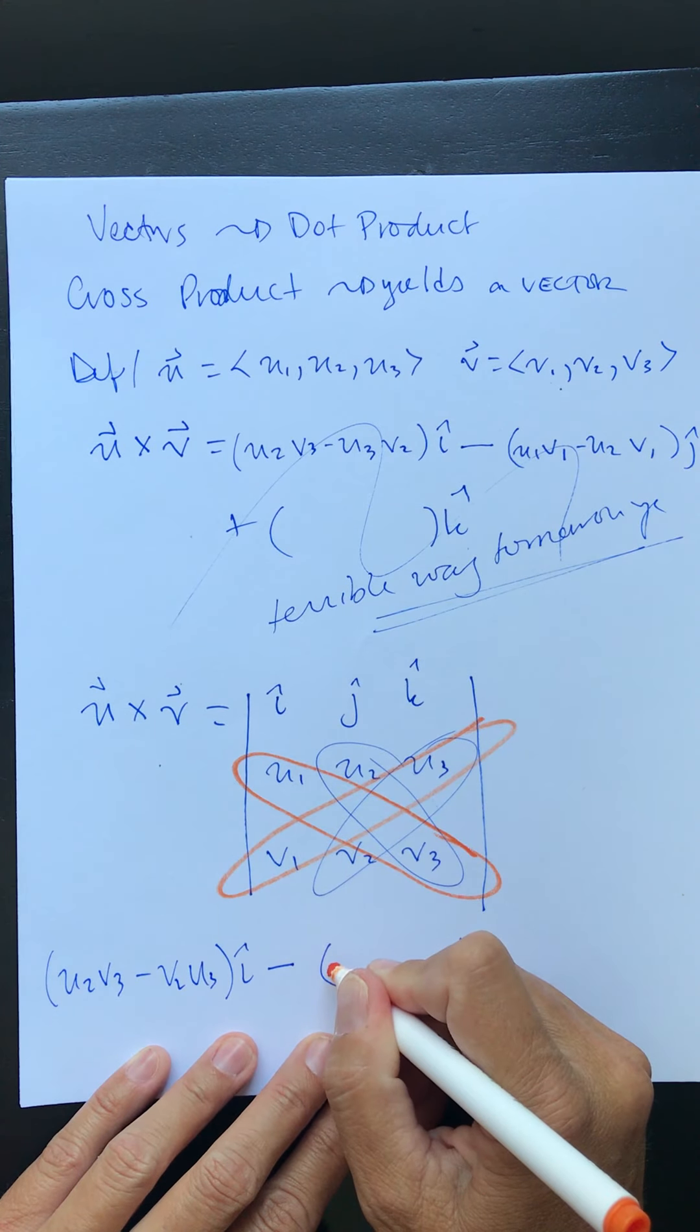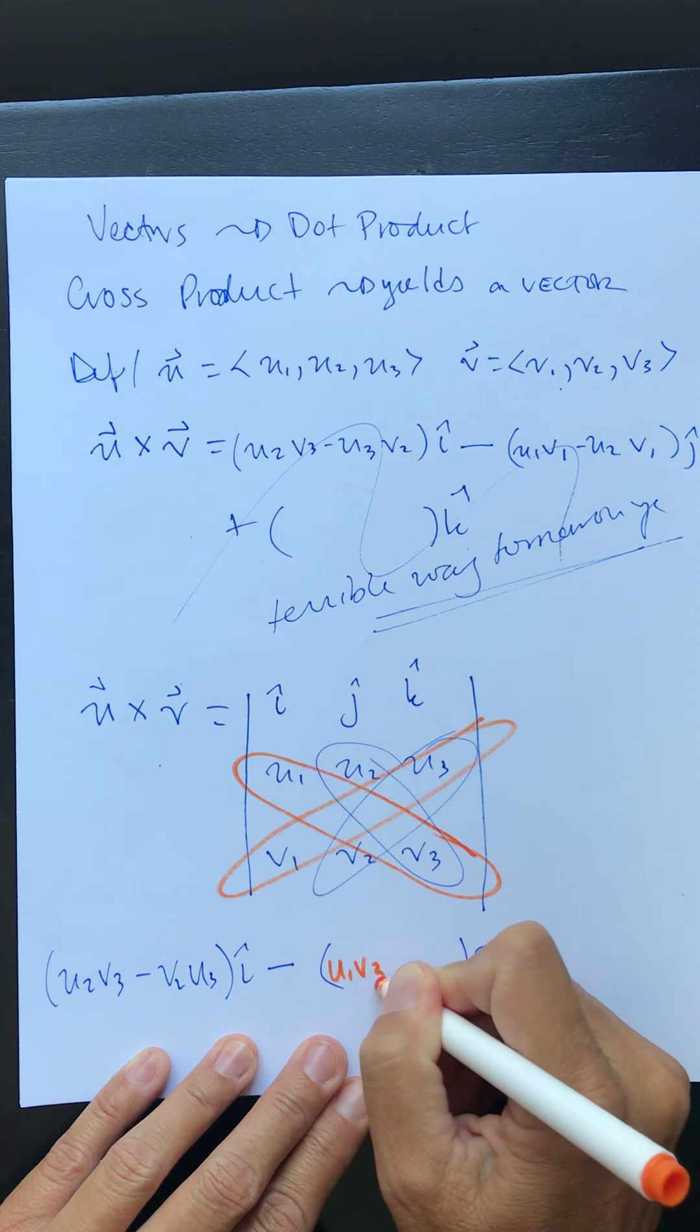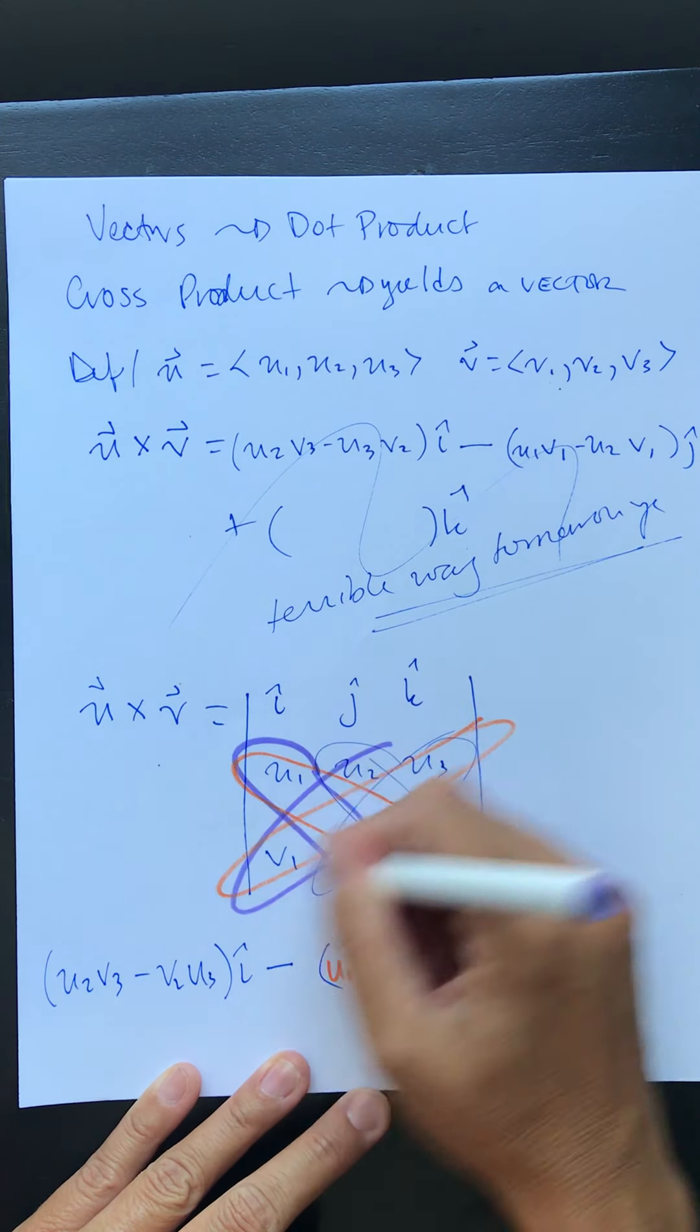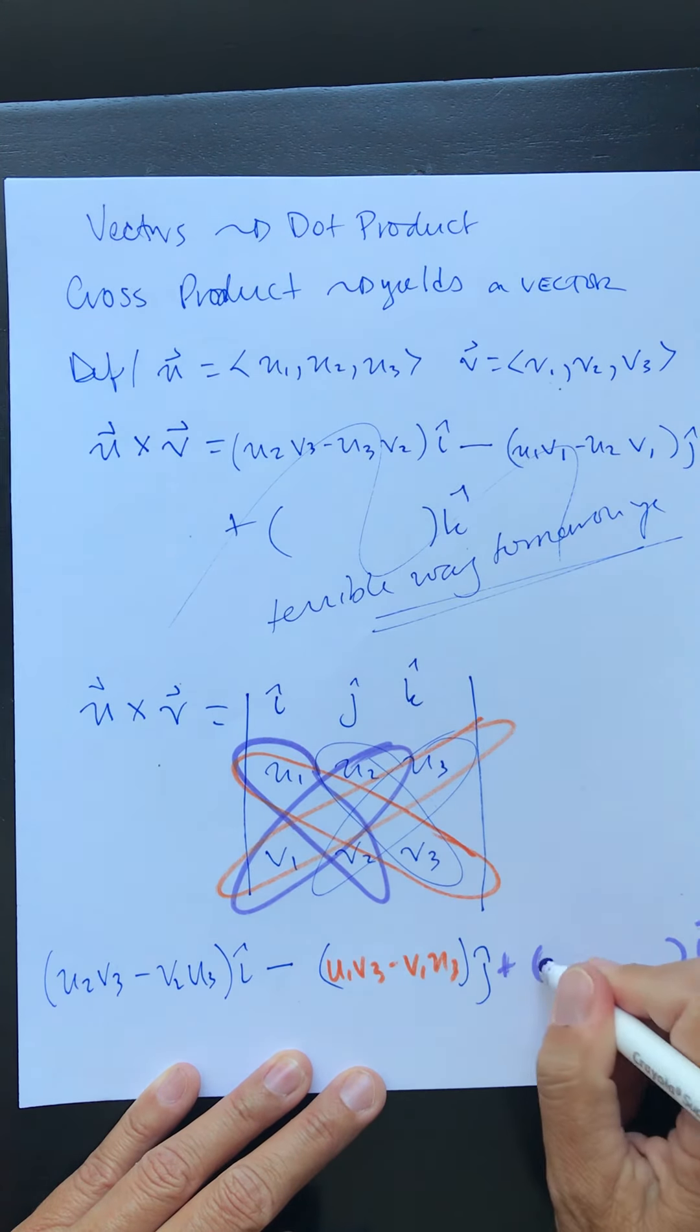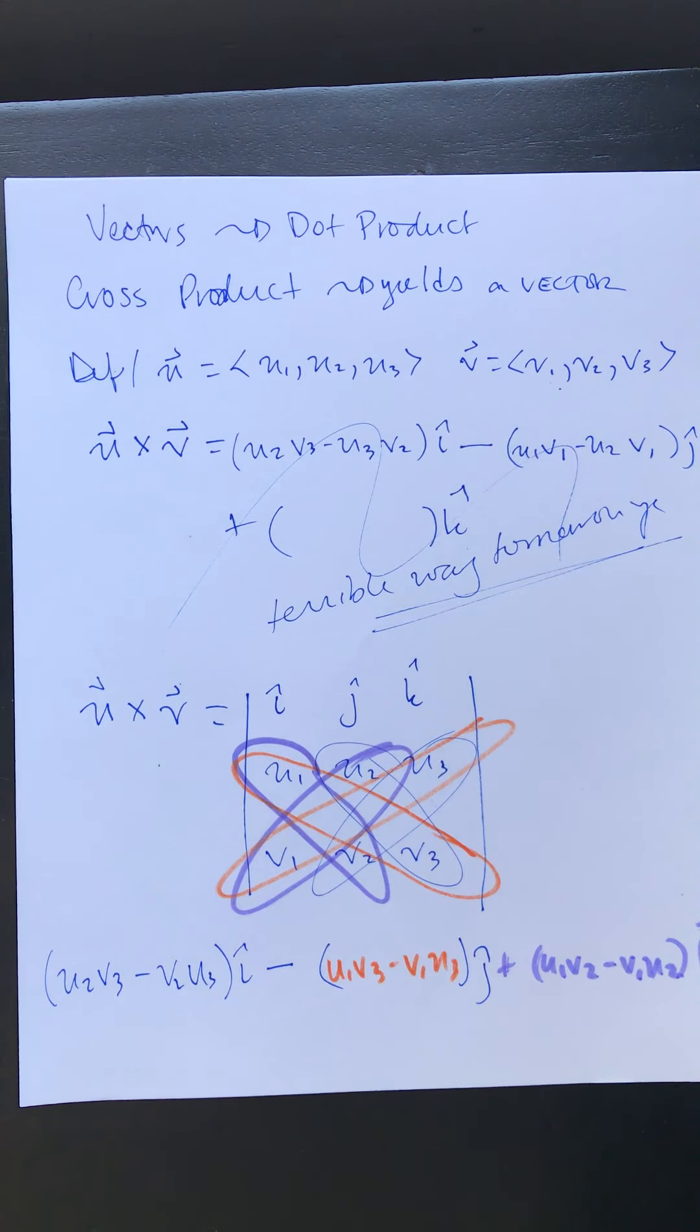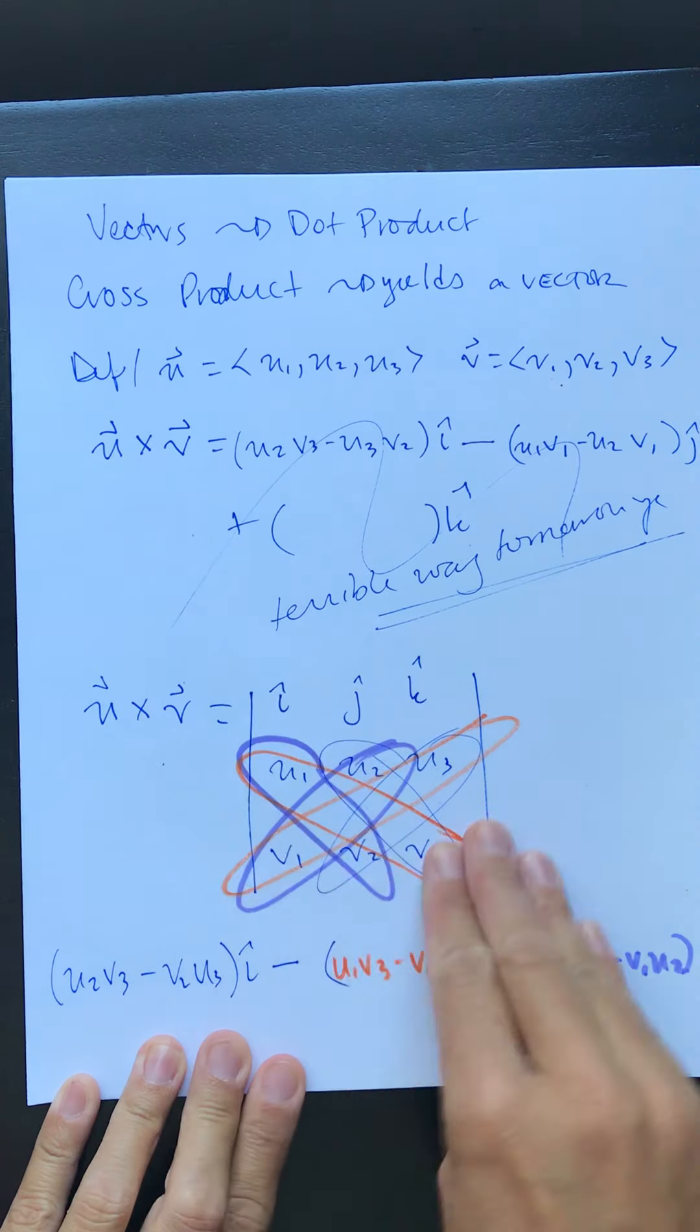So it's going to be u1 v3 minus v1 u3 j hat, and for k hat we're going to cross out the k hat and it's going to be these. So plus, the only one that's negative is j hat, so it's going to be u1 v2 minus v1 u2. Again this looks really scary. I really encourage you not to memorize this as a formula but just to remember this process.